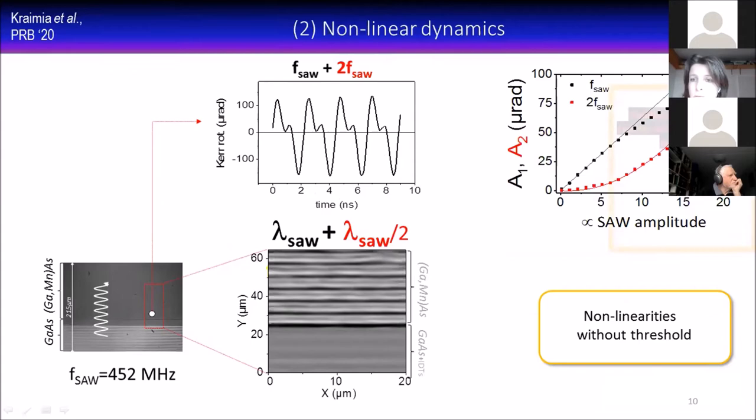We see a nice quadratic behavior versus SAW amplitude for the two f SAW component, and linear then sublinear behavior for the f SAW component. What was quite interesting for us is that we were getting this frequency doubling at very small SAW amplitude without a threshold. That's not necessarily the case with other systems like STNOs that we talked about earlier, where non-linear behavior usually comes with a threshold power or threshold current.